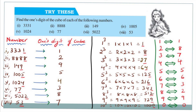In our previous class, we saw the Hardy-Ramanujan number, which is 1729. We also covered cubes from 1 to 20. Based on that, one question is given — let's try this question.